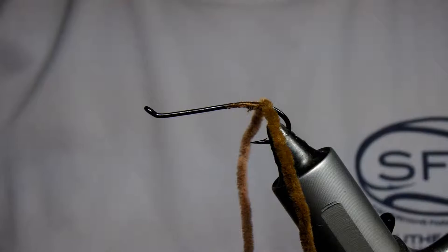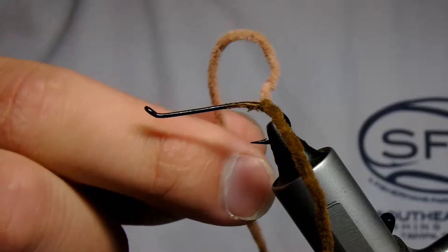So what you want to do, you want to start by tying in your two pieces of chenille. They should be two different colors. For this one I'm using ultra chenille in standard, both in brown and worm brown.